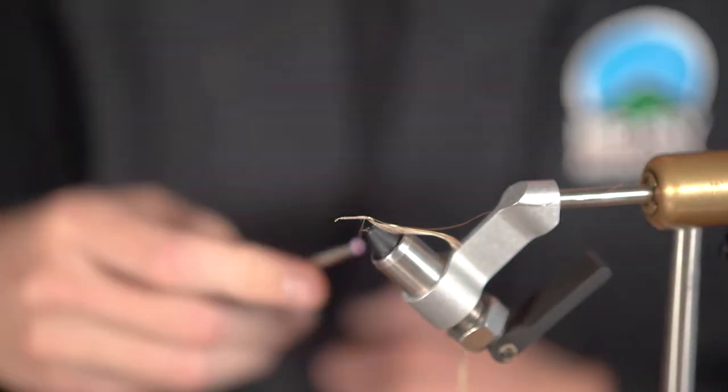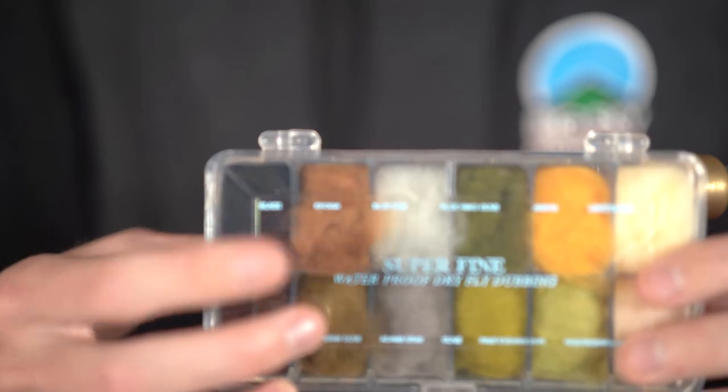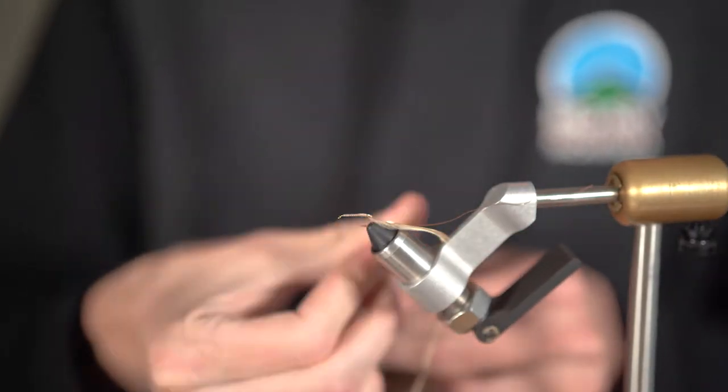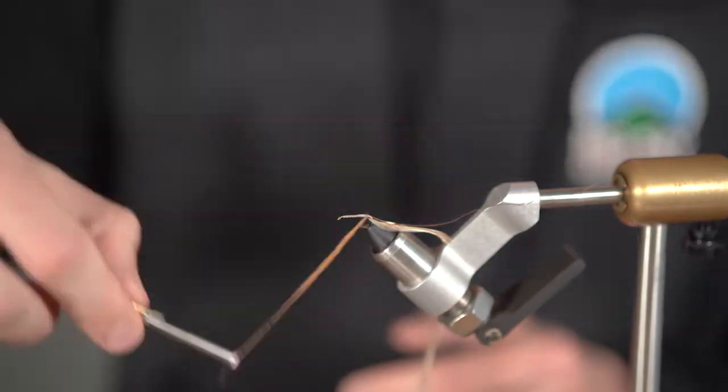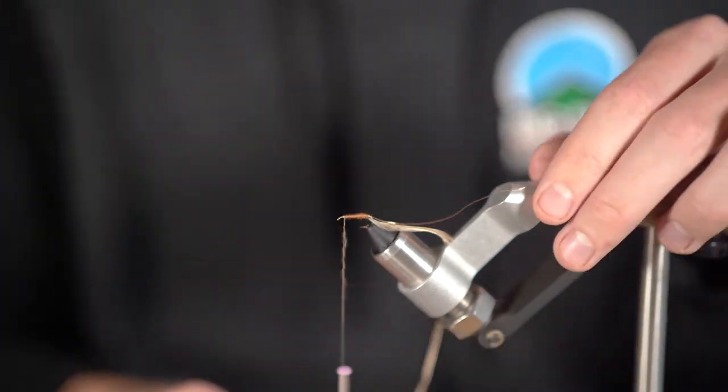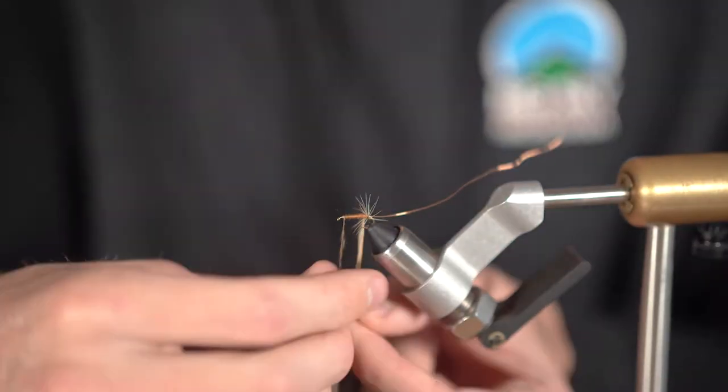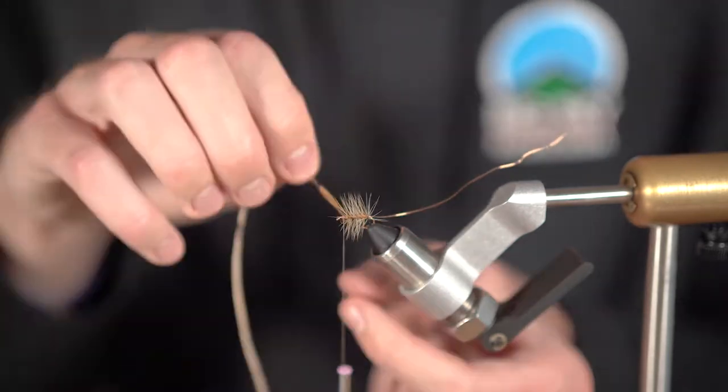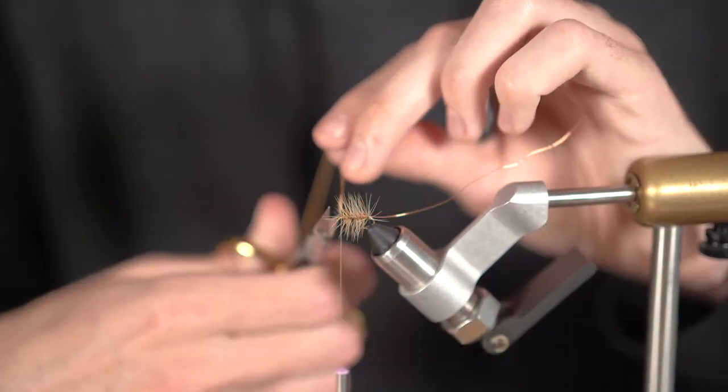Now grab out a pinch of the brown superfine dry fly dubbing and start to spin that onto the thread. I found that if you wet your fingers a little bit it helps the dubbing stick to the thread. Once spun onto the thread wrap it up to just before the eye of the hook. You'll want to leave more space between the dubbing and the eye than you would think.